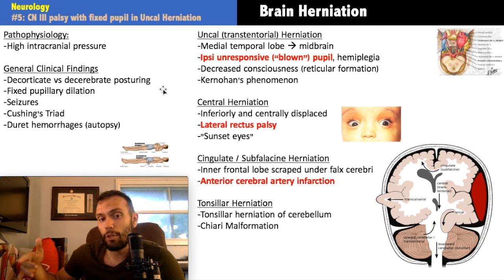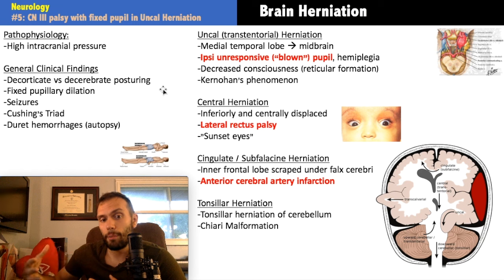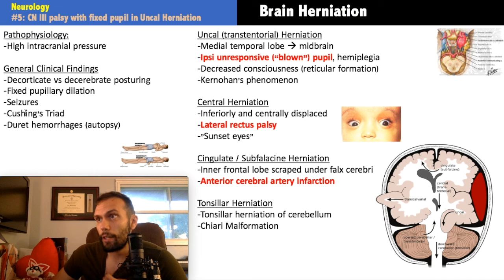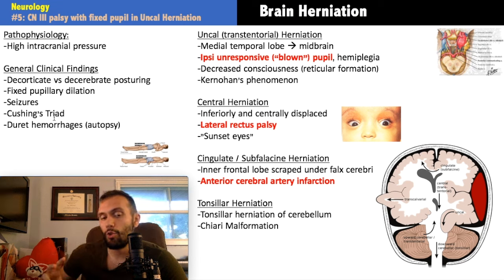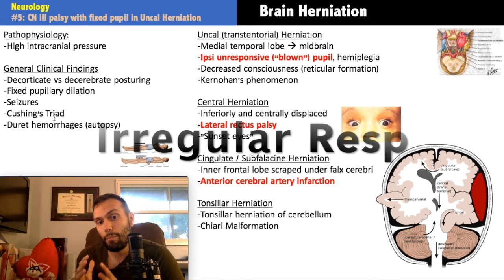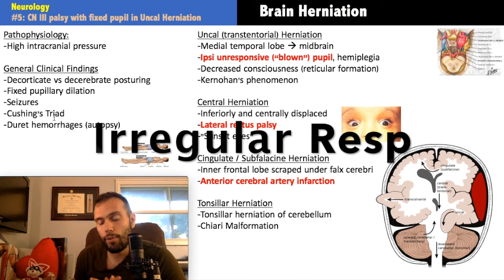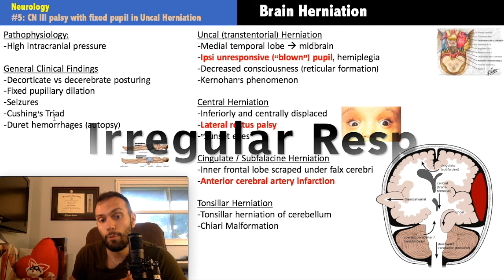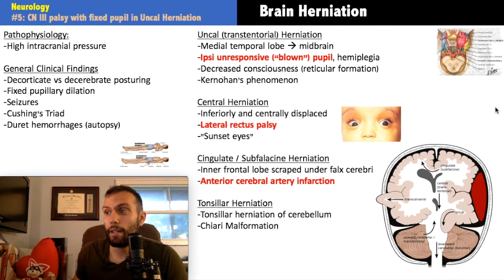If there's medullary involvement, expect intractable vomiting because the area postrema is there. Other findings of herniation include fixed pupillary dilation from cranial nerve three compression and seizures. Cushing's triad is critical to remember: first, decreased respirations from brainstem respiratory center dysfunction — this leads to CO2 retention since CO2 is ventilation-dependent, and CO2 causes cerebral vasodilation, increasing ICP.